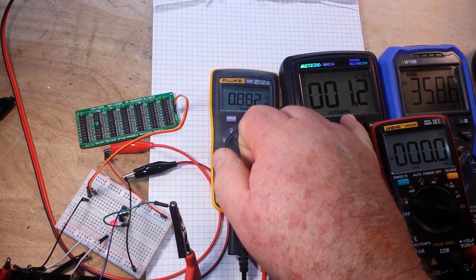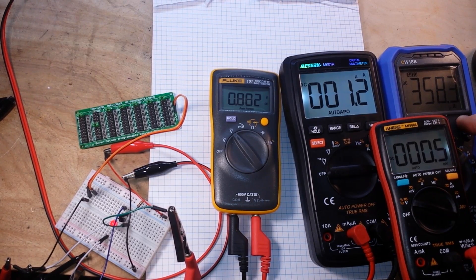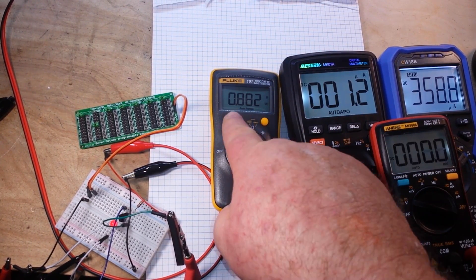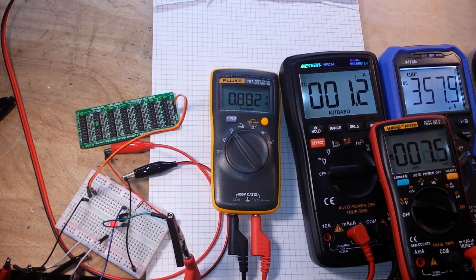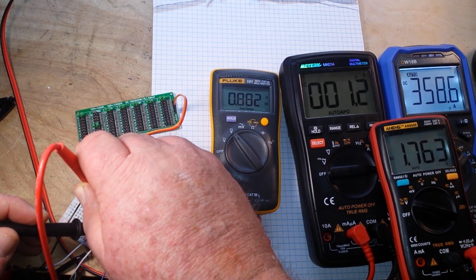We'll power it back up. So at half a mega ohm, 1.2 base current, 358 collector current, collector-emitter voltage of 0.882 volts.